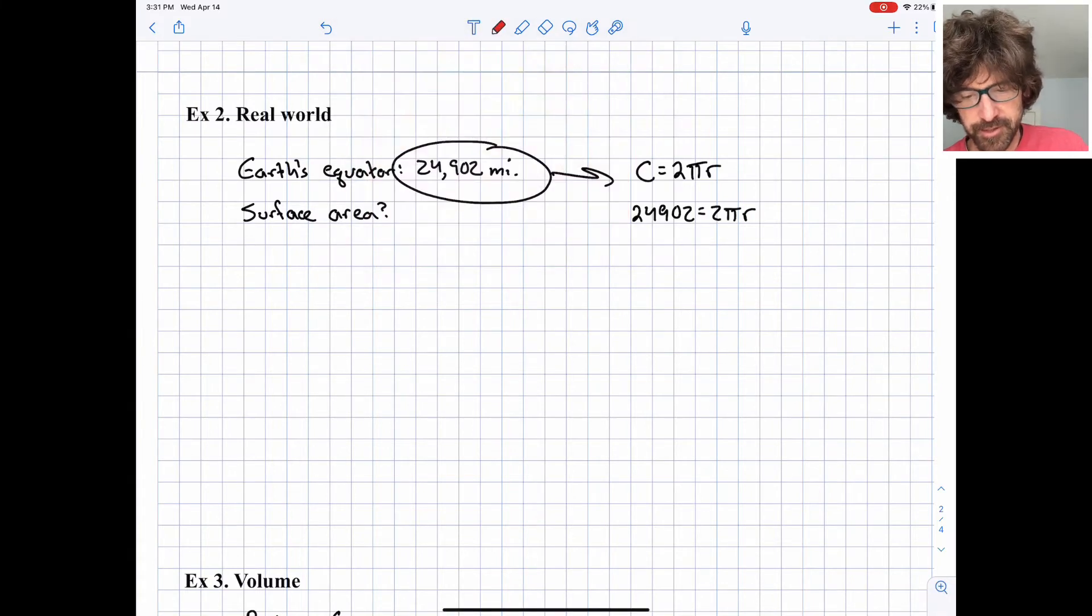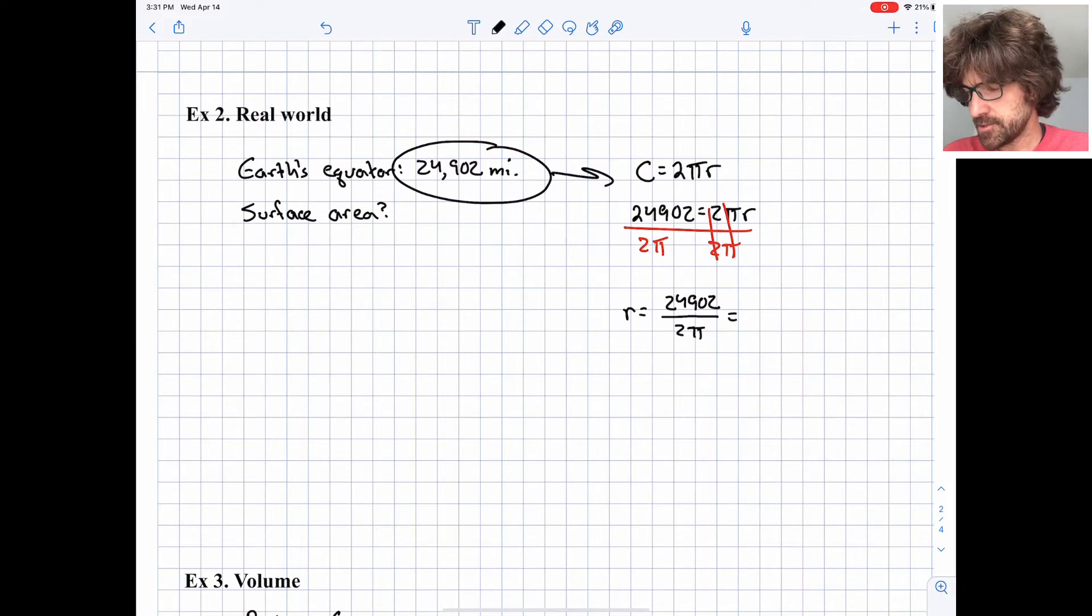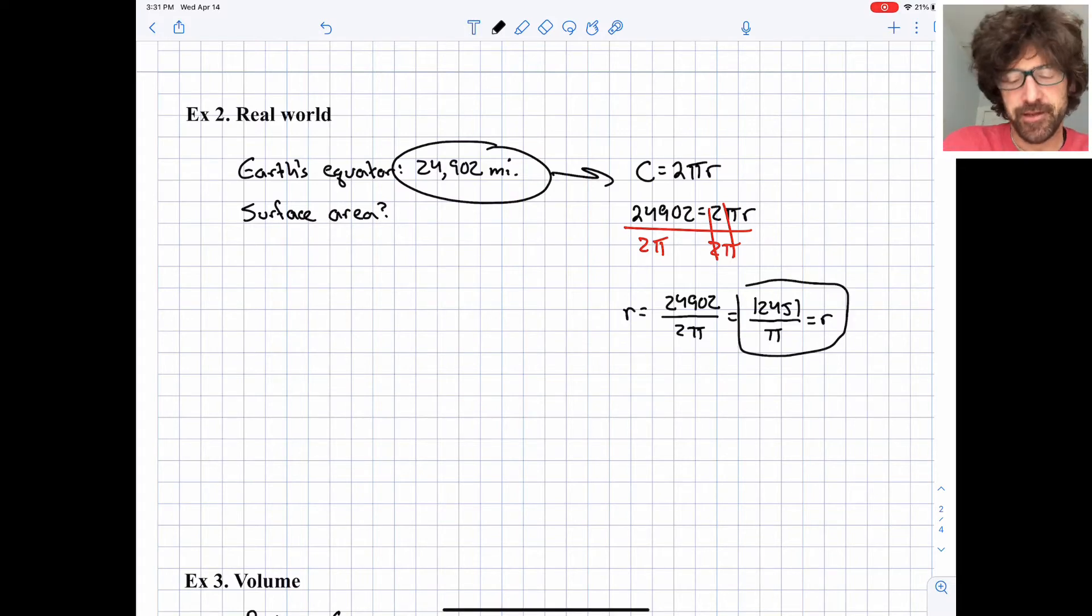And so we can say that 24,902 equals 2πr. And we can divide both sides here by 2π and solve for the radius of the Earth. So we have the radius of the Earth is 24,902 divided by 2π. I'm going to cancel out that 2, so I get 12,451 over π. That's the radius of the Earth, 12,451 divided by π.